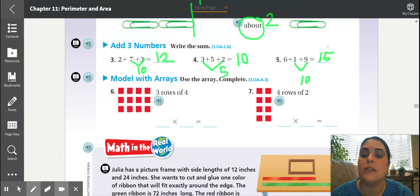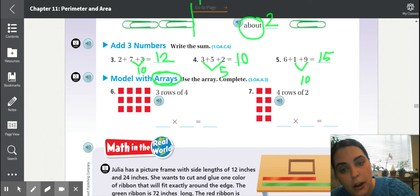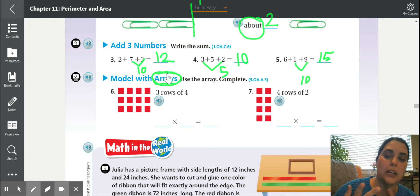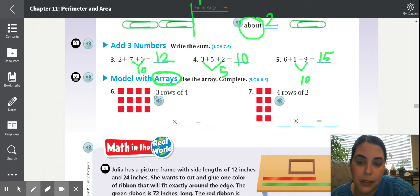Number six and seven, these are modeling with arrays. That's a word we already know from multiplying and dividing. Three rows of four. Where'd we get the three from? One, two, three. Where did we get the four from? How many are in each row? One, two, three, four. Three times four, we can count by threes, we can count by fours. Three, six, nine, 12.